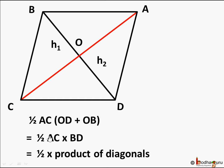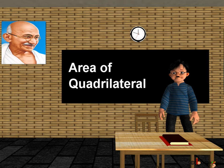So the area of a rhombus is half of AC multiplied by BD — that is, half the product of its two diagonals. In a generic quadrilateral, the area is half of one diagonal multiplied by the sum of the heights opposite to it. But in a rhombus, where all four sides are equal and the diagonals are perpendicular, the area is half multiplied by diagonal AC multiplied by diagonal BD. That's all for this lesson, children. Bye bye!